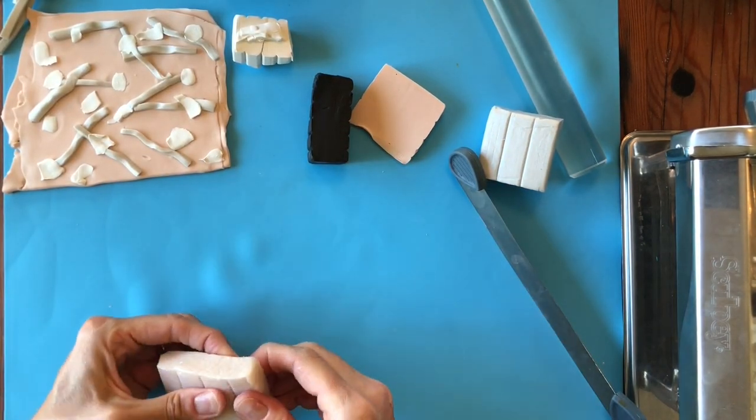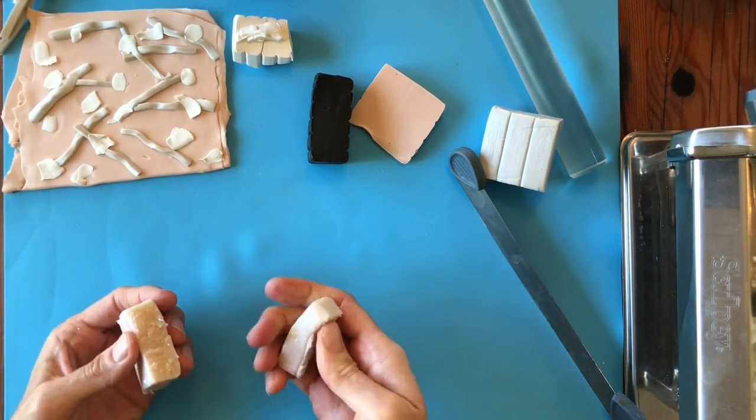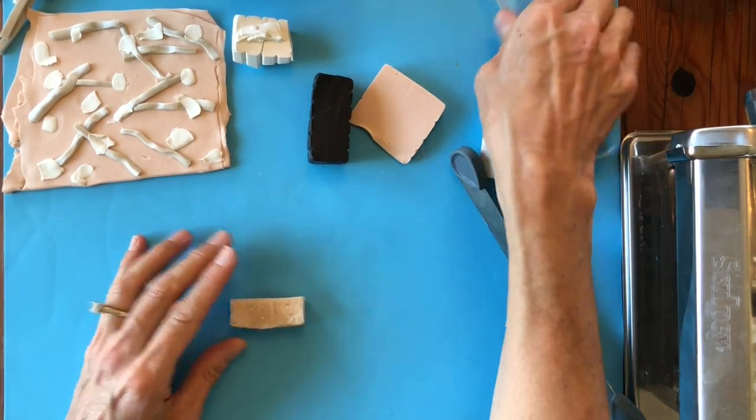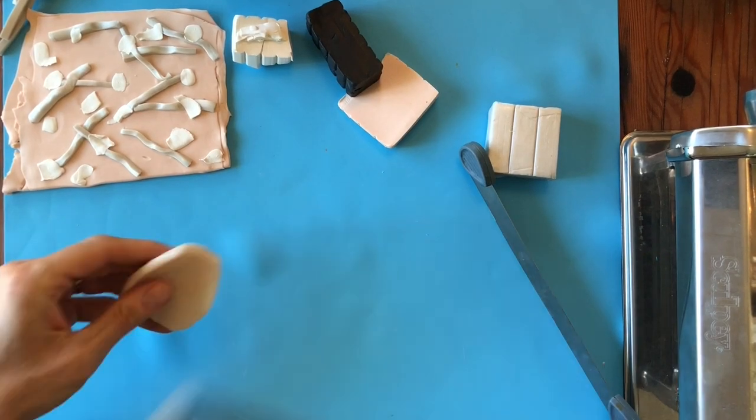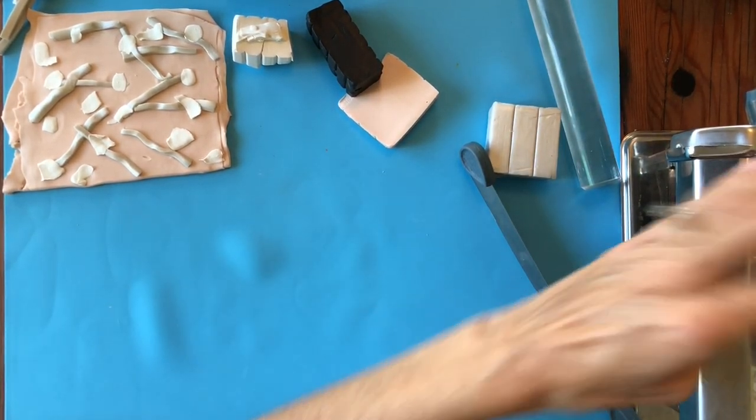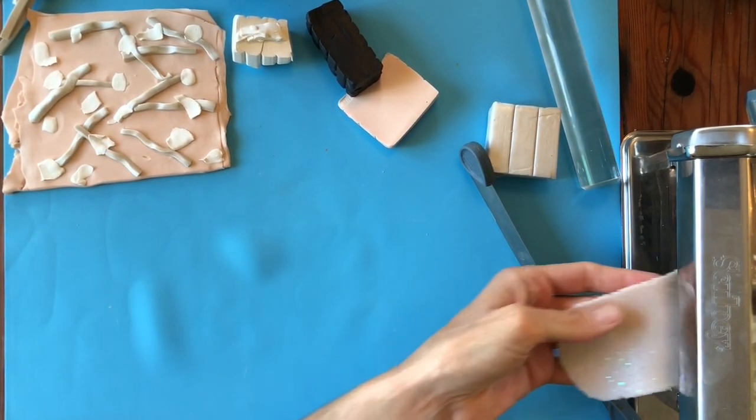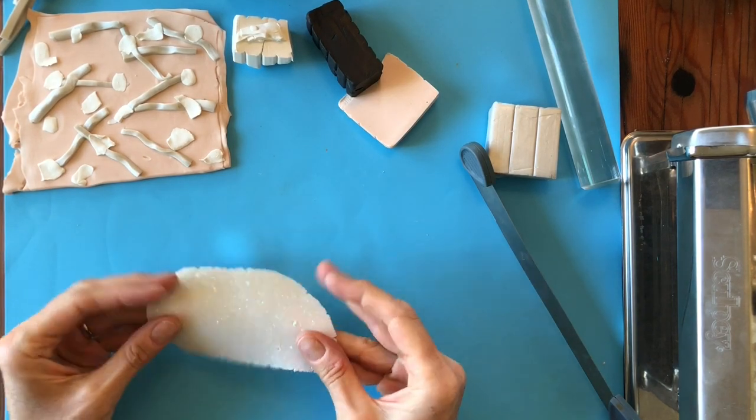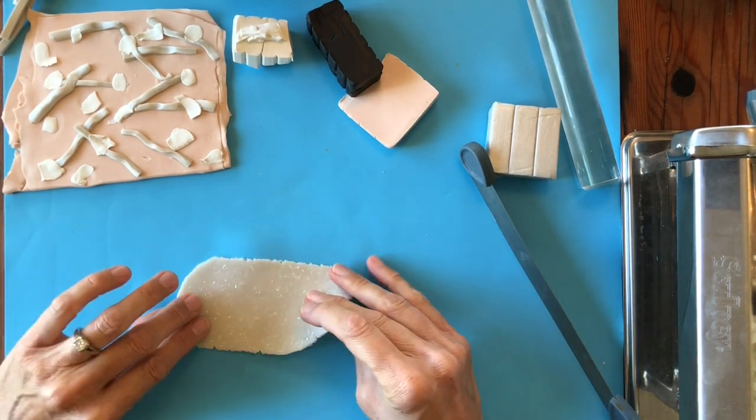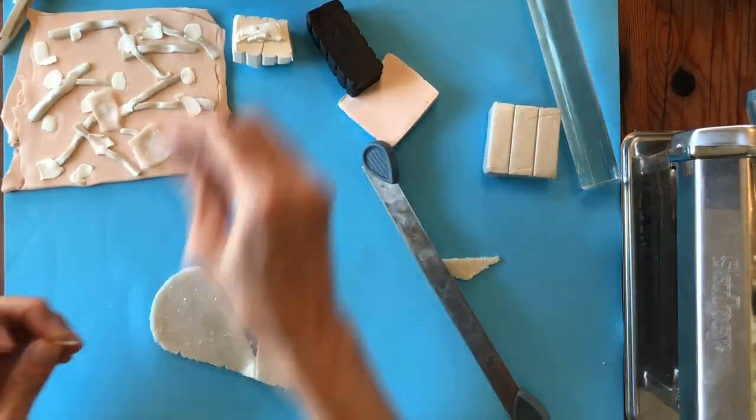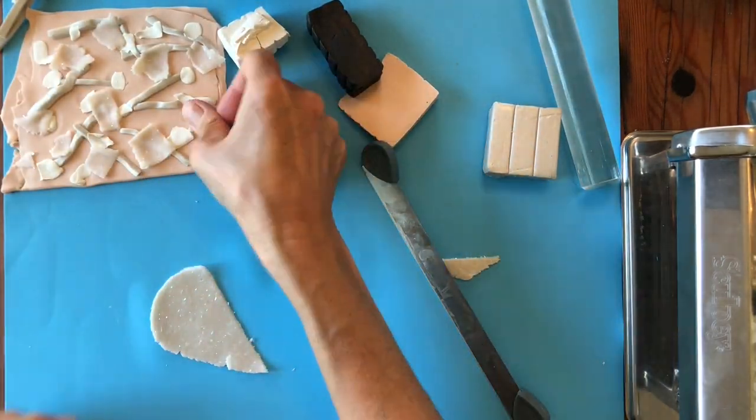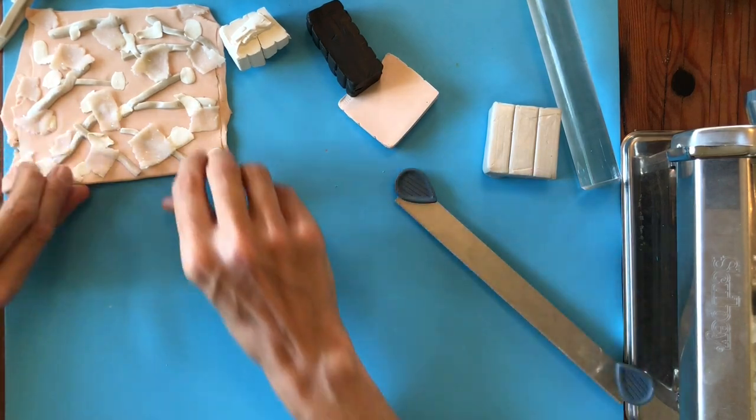Then I take the opal which is quite rigid and I want it to be thin and pliable so I'm going to run it through the machine. Now I can cut it into shapes and place them all over the slab. This clay will cook translucent so all you'll see is the glitter once it's baked.